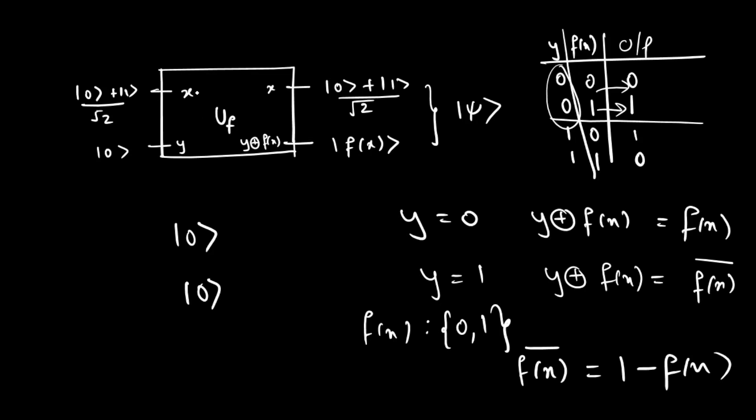So as we know the first entry that is the data register gives the output same. And the second entry which is called as the target register gives the output as y XOR f(x). And since our value of y is 0 the output would be simply f(x). And these two qubits are the tensor product for our final state ψ.